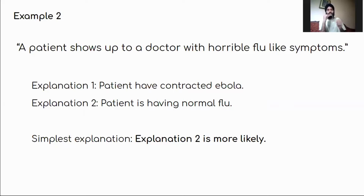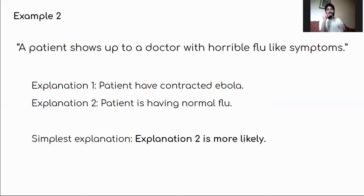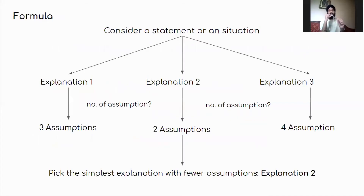In this second example, a patient reaches out to a doctor with horrible flu-like symptoms. Explanation one is that the patient has contracted Ebola. Explanation two is that the patient has a normal flu. Applying Occam's Razor, for Ebola you need not only flu-like symptoms but other symptoms as well, so the chances of having Ebola are less likely. Therefore, explanation two — normal flu — looks like the simplest solution.